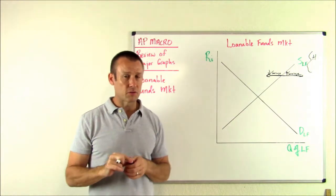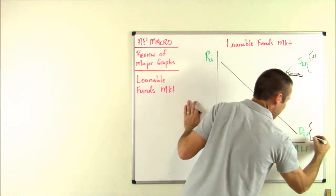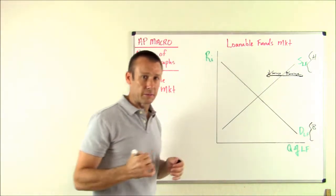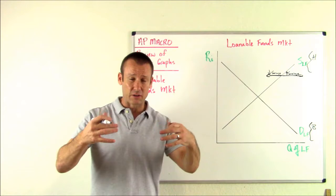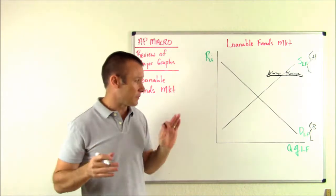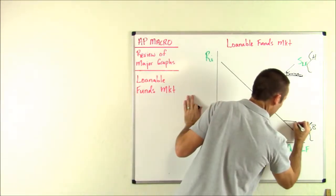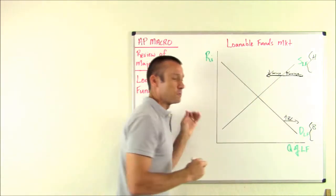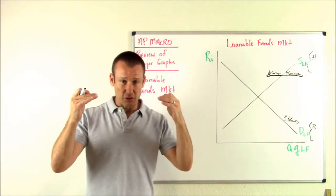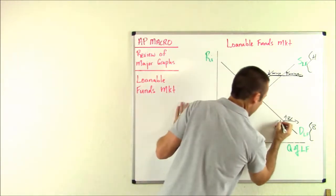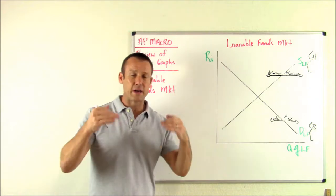Next, businesses. Every economist agrees they are demanders of loanable funds — every textbook, every economist, all teachers. If business confidence increases, if the expected real rate of return of business projects increases because businesses feel more confident about the economy, demand for loanable funds is going to increase, and what's going to happen to the interest rate? It's going to go up. If business confidence decreases, businesses adjust their expected real rate of return downward, we shift the curve to the left — that's a decrease in business confidence — and the real interest rate goes down.